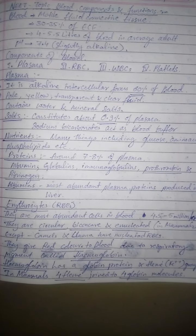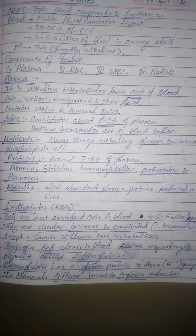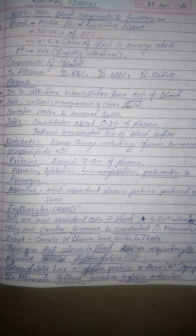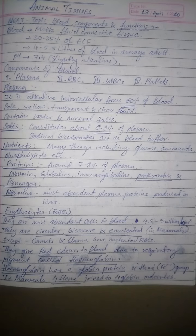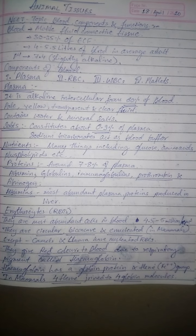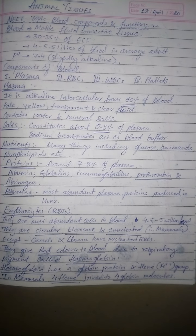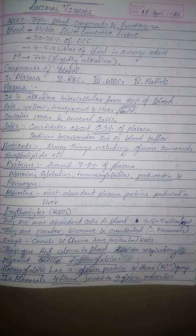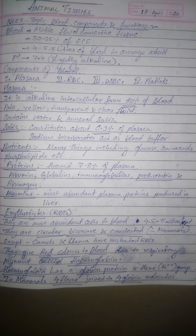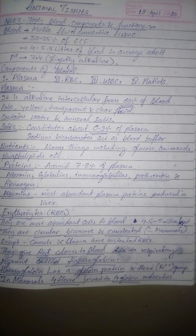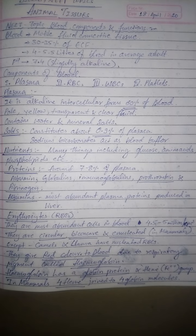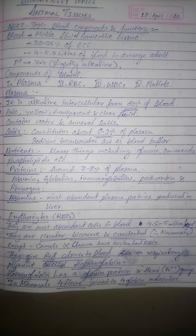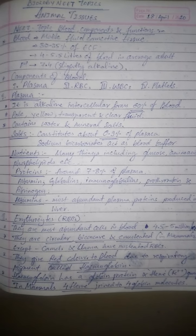Hemoglobin has a globin protein part and a heme group, making it a conjugated protein. Globin is the protein part and heme is the non-protein part. Heme constitutes an Fe²⁺ group. In mammals, there are four heme groups attached to four globin molecules.